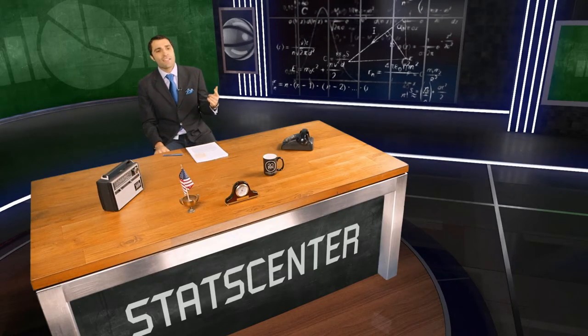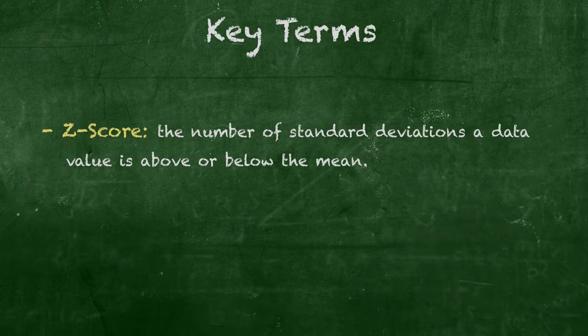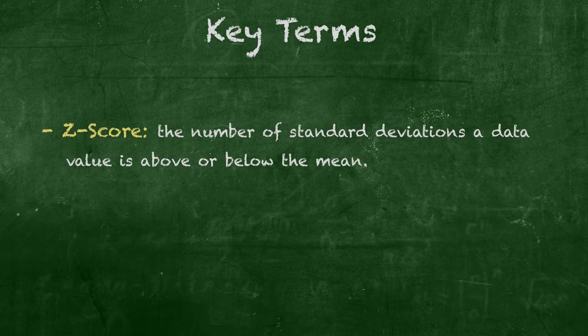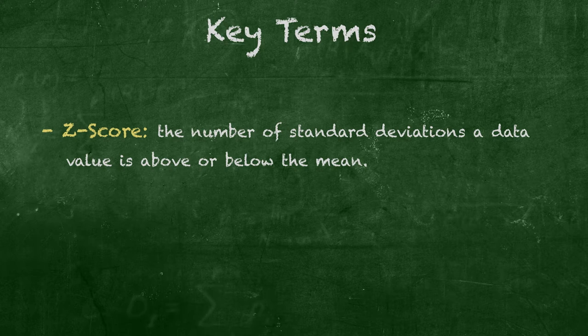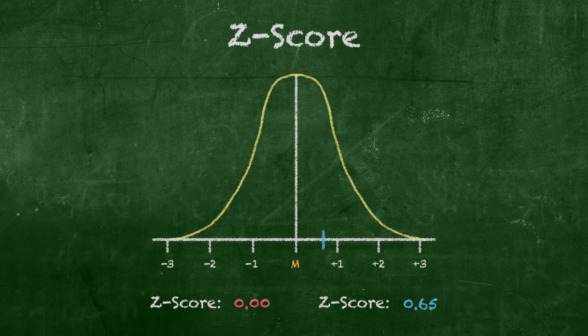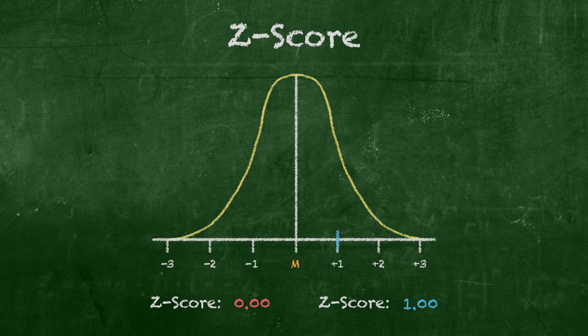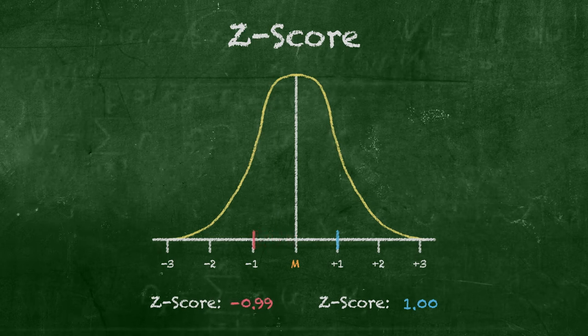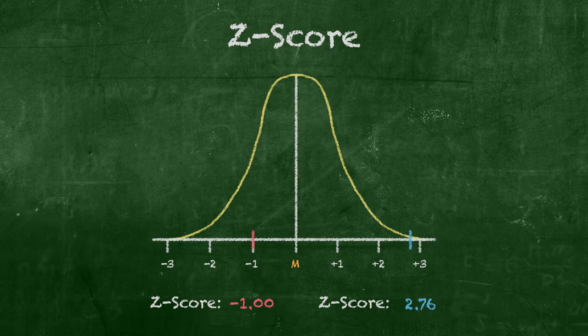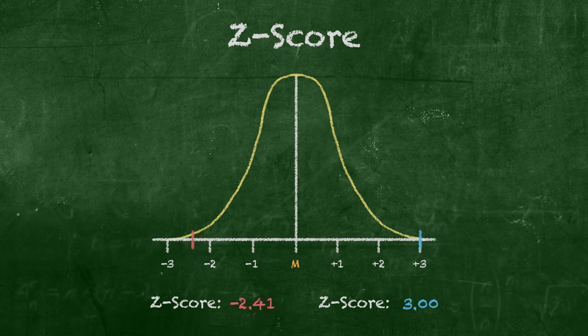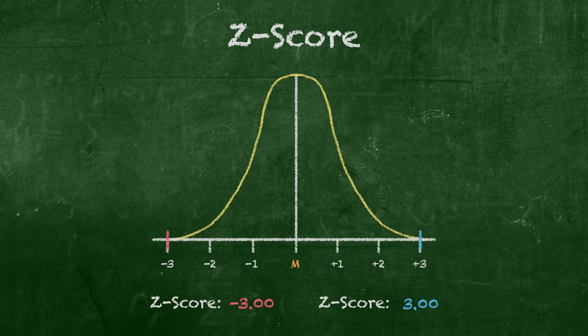Jordan, have the statistical gods bestowed us with a savior to this existential conundrum? They have indeed, Robert, and his name is the Z-score. The Z-score is the number of standard deviations a data value is above or below the mean. If a data value is one standard deviation above the mean, the Z-score is one. One standard deviation below the mean makes the Z-score negative one. The higher the Z-score, the further above the mean that data value is, and the lower the Z-score, the further below the mean that data value is. By calculating Z-scores for both Kershaw's and Martinez's performances, we can directly compare them and measure which pitcher had the better year.